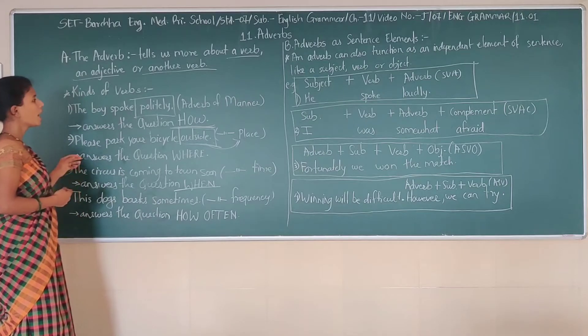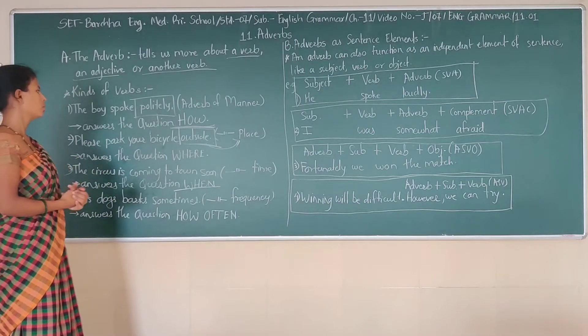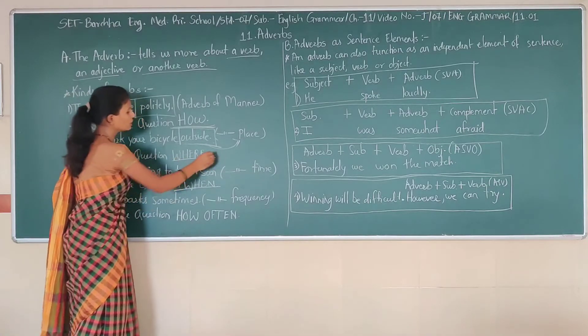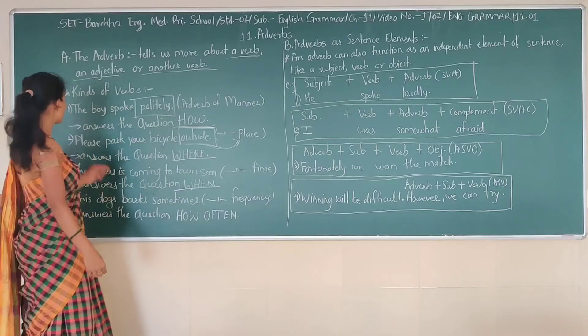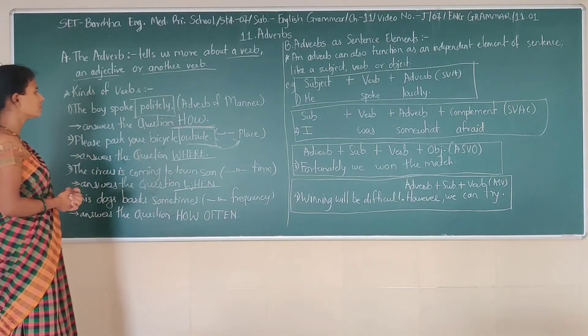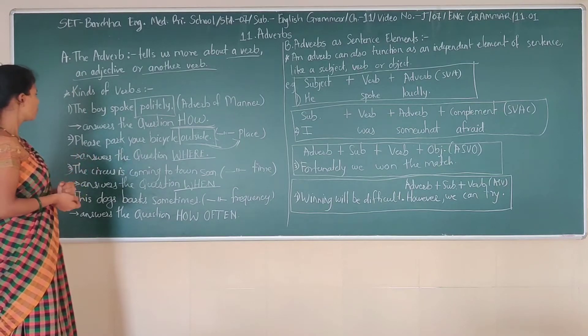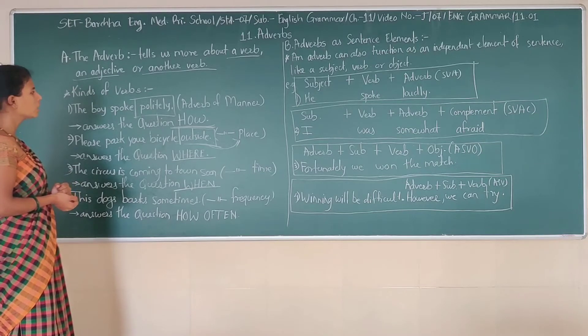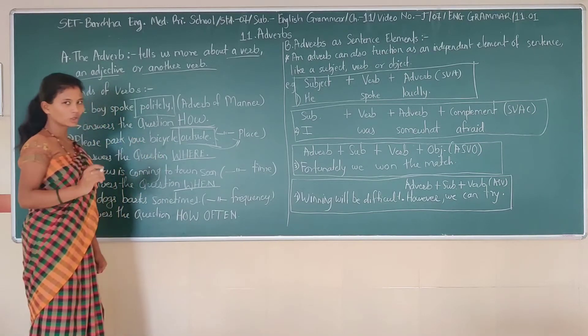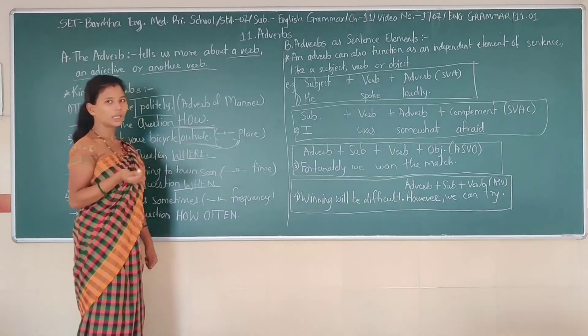Now second one, adverb of place. How can you find out that? You have to question with where. See the example, please park your bicycle outside. So what will be your question? Your answer will be outside, right? So outside is your adverb of place.